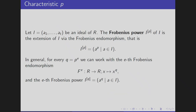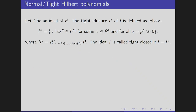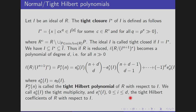Now, what is the tight Hilbert polynomial? The tight Hilbert polynomial is of characteristic p. I will skip the slide defining normality. The tight closure I* is defined by this formula. I is called tight closed if I equals I*. We have that I ⊆ I* ⊆ Ī. So if R is a domain, the co-length of (I*)^{n+1} becomes a polynomial of degree d with the same first coefficient as the Hilbert polynomial. This equals the tight Hilbert polynomial.